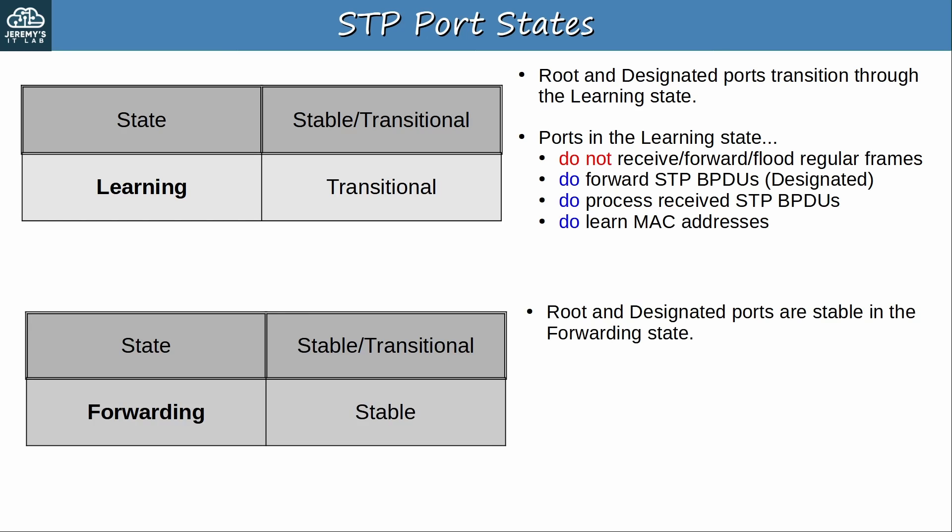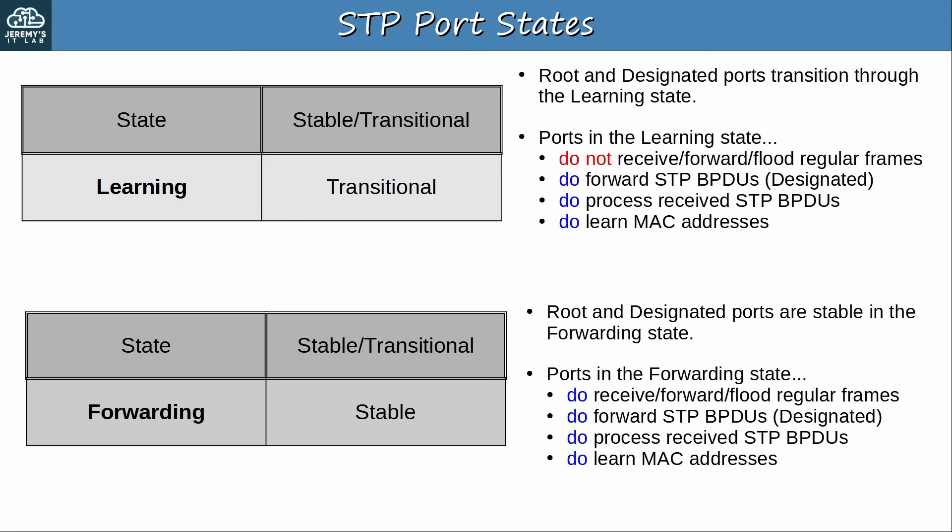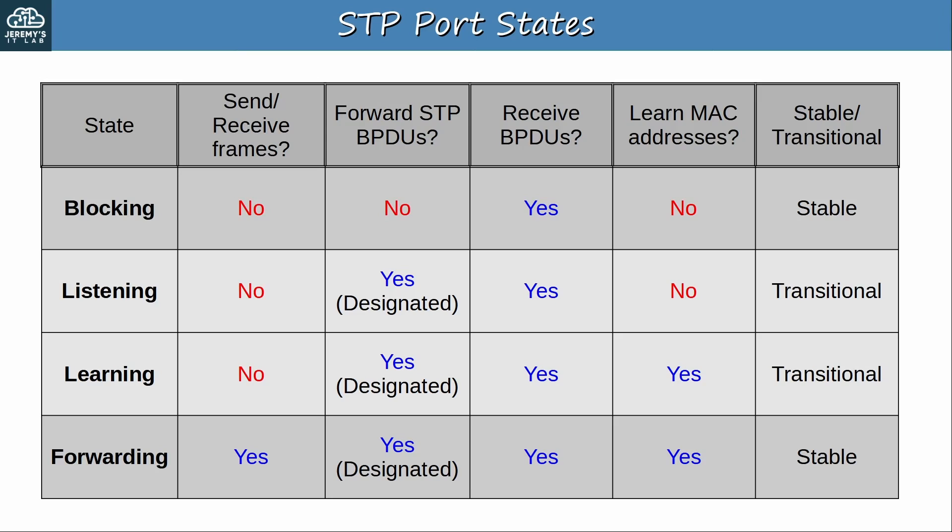Finally, there is the forwarding state, the stable state for root and designated ports. Ports in this state are fully operational. They receive, forward and flood regular frames, forward STP BPDUs, process received BPDUs, and learn MAC addresses from the frames they receive. For quick review, here's a chart summarizing what we just covered. Next we'll move on to the STP timers, but we'll also look at these port states when looking at the relationship between the STP states and timers. Pause the video if you want to look through this chart.